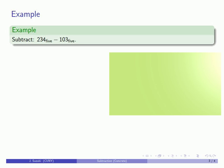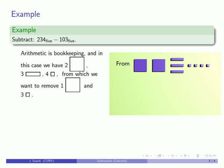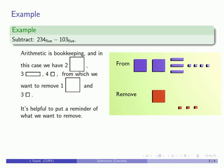So let's do the subtraction 234 base 5 minus 103 base 5. Arithmetic is bookkeeping and so what this is saying is that we have two big things, three medium, four small and from this we want to remove one big thing and three small objects. And here the bookkeeping aspect it's helpful to put a reminder someplace of the things that we want to remove and to check them off as we've removed them.